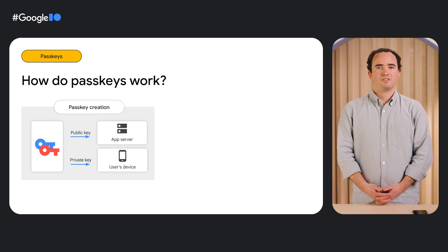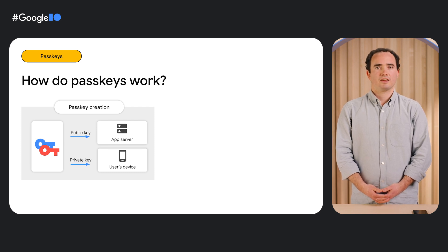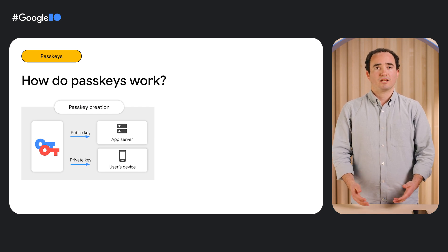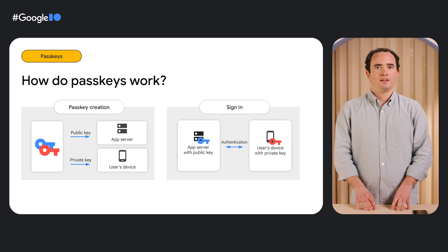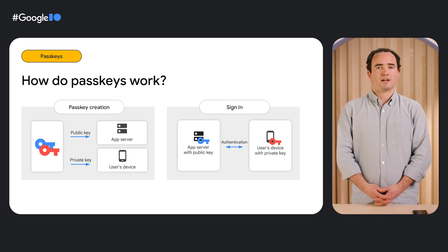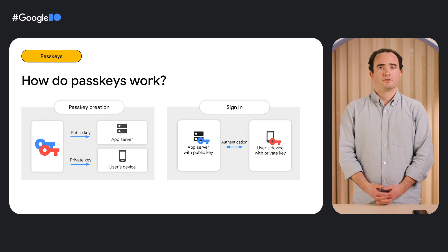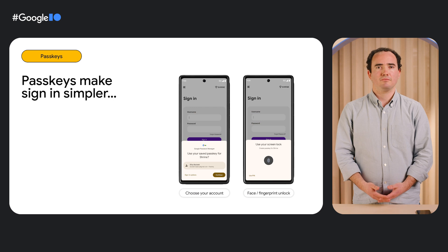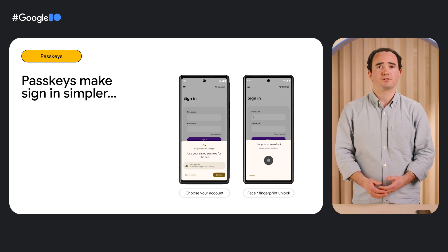When creating a passkey, the user's device generates a private-public key pair. The public key is sent to the server while the user's device keeps the private key. Then, when the user wants to sign in again, the private key is used to prove to the server that the user has it. All the user needs to do is use their device's screen lock, like fingerprint or face unlock. The user's chosen password manager, such as Google Password Manager, keeps passkeys synchronized across the user's Android devices, so even if the user loses their phone, they won't lose their credentials. Passkeys make the signing experience simpler, enabling a seamless flow where the user just focuses on selecting the right account without needing to remember usernames or passwords, copy-paste a one-time code from SMS, or tap on a link in their email inbox.